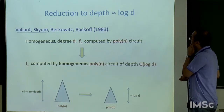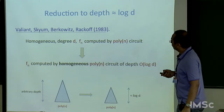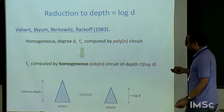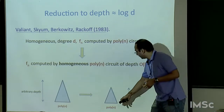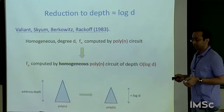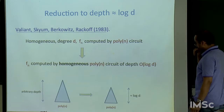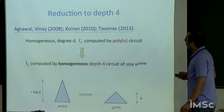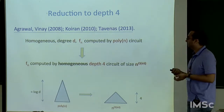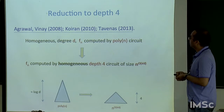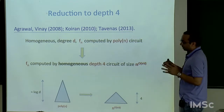This is the first in a chain of depth reduction results by Valiant, Skyum, Berkowitz, and Rackoff in 1983. It shows that if you start with any poly-size circuit of arbitrary depth, you can compress it to roughly log(D) depth without losing much in size, where D is the degree of the computed polynomial.